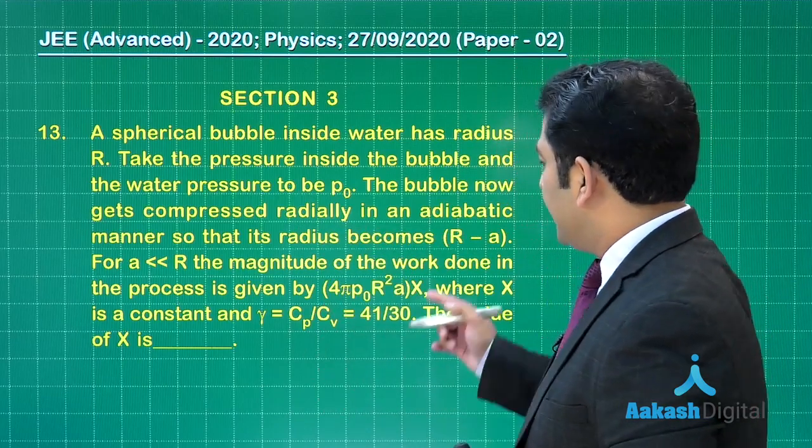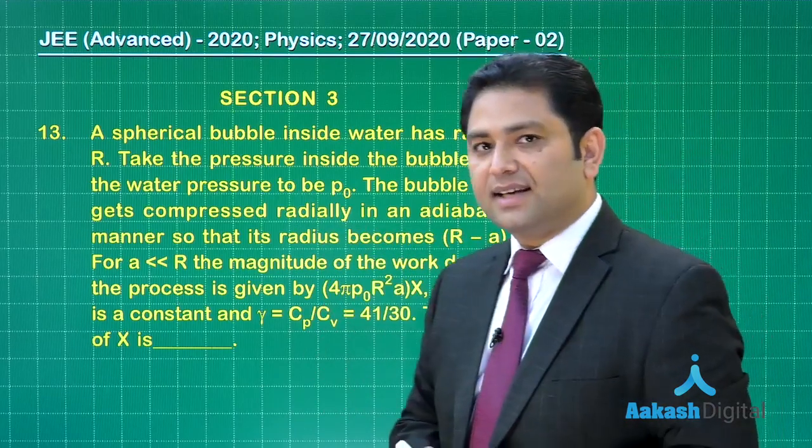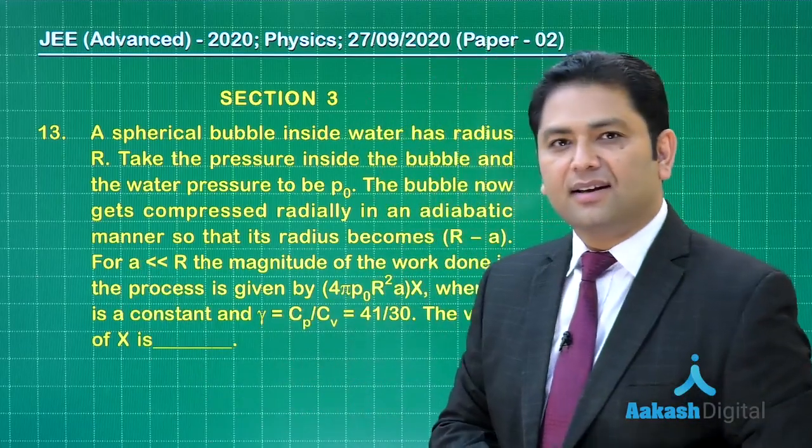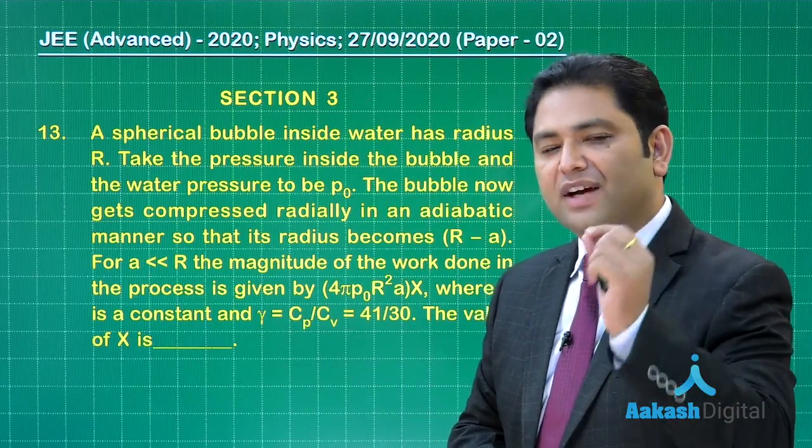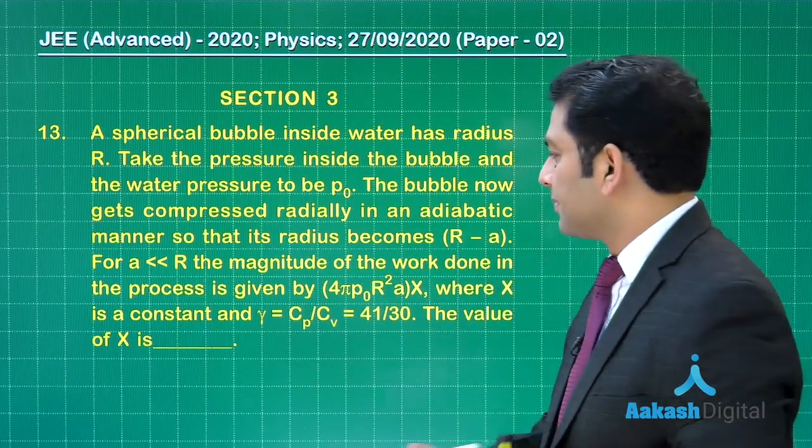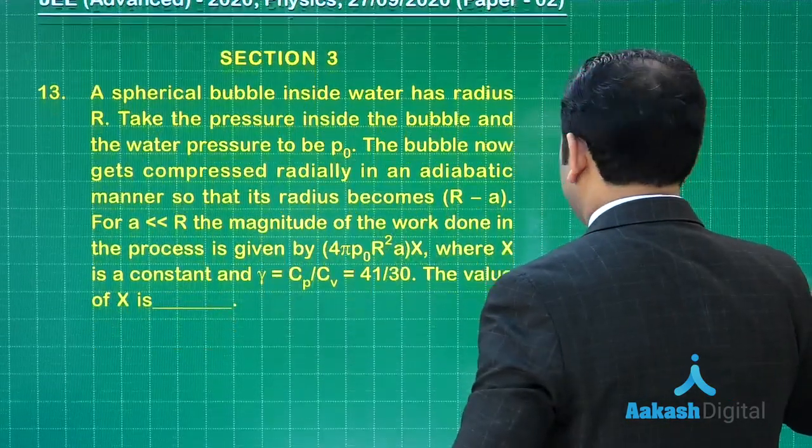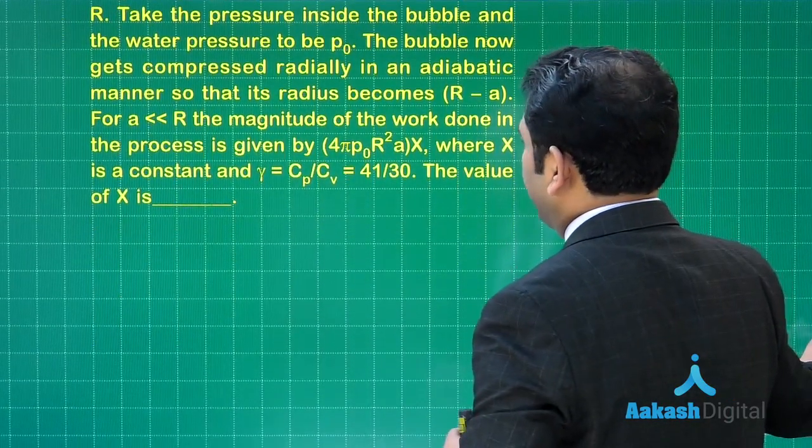The new radius is R minus a, with the given condition a is very much less than capital R, indicating it is an infinitesimal compression. We need to compute work done and equate with this, and eventually we need to find the value of x.